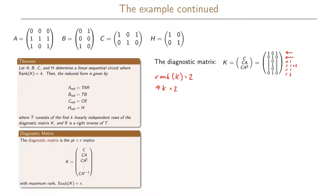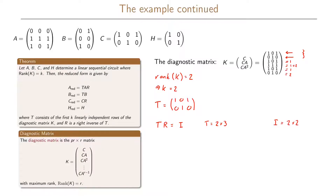The matrix T is given by the first two linearly independent rows of diagnostic matrix K. So T = [1,0,1; 0,1,0]. Our next step is to find matrix R, the right inverse of T, such that T times R equals the identity matrix I. Since T is a 2×3 matrix and I is 2×2, R must be a 3×2 matrix.